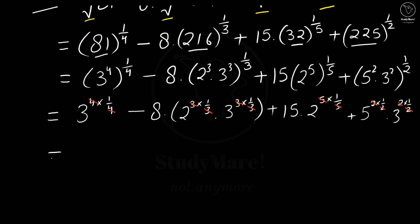So here we get 3 to the power 1, that is 3, minus 8 into 2 to the power 1, that is 2, into 3 to the power 1, that is 3, plus 15 into 2 to the power 1, that is 2, plus 5 to the power 1, that is 5, into 3 to the power 1, that is 3.